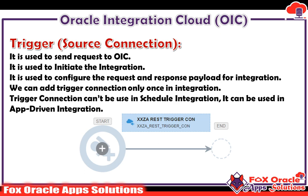From the name it is clear — it is the triggering point of the integration. If we want to configure the request and response payload for an integration, we need a trigger endpoint. With the help of a trigger endpoint we can configure the request and response payload. Suppose we are creating an app-driven integration and we need some request from the user and some response from the integration.